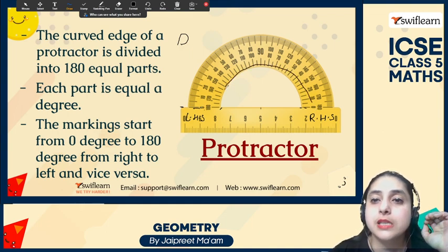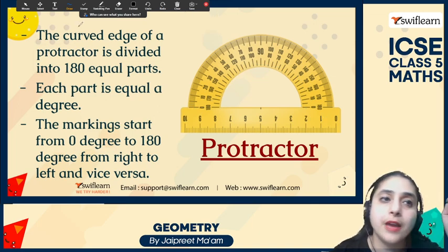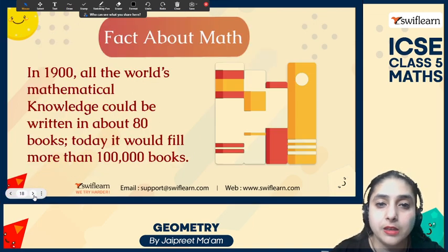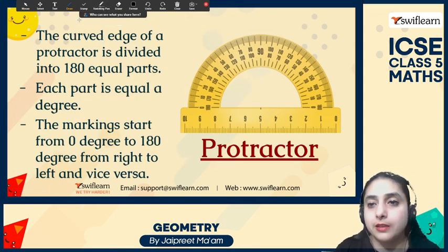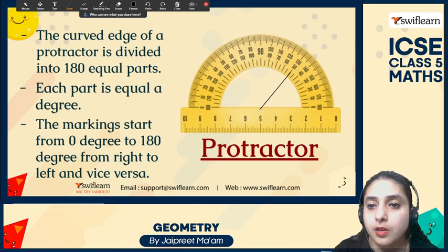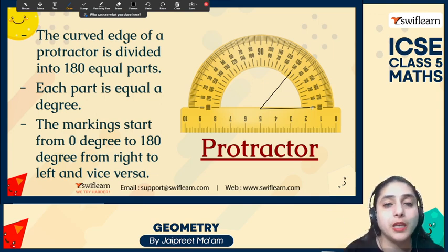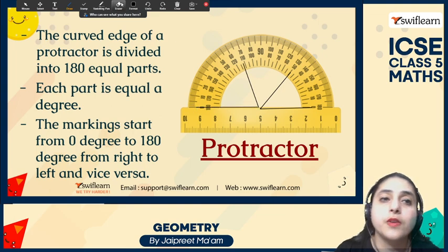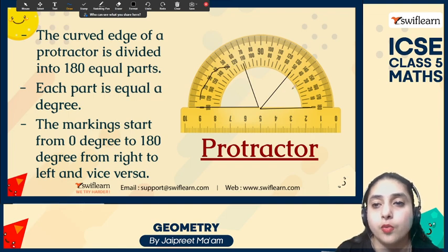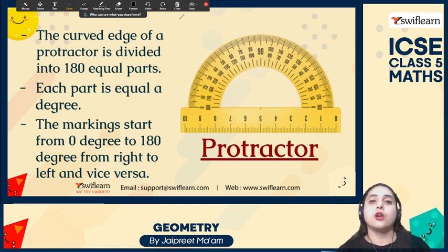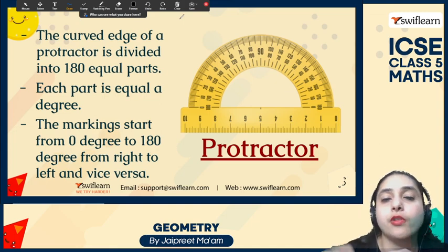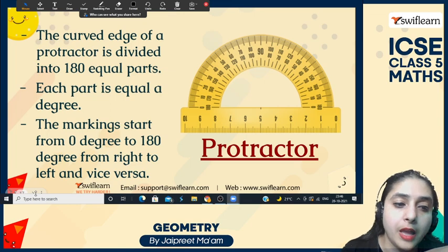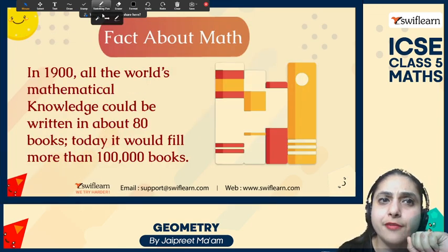The reason we have two scales is to measure angles in different orientations. If you have an angle that opens towards the right-hand side, use the scale that begins with 0 from the right-hand side. If you have an angle that faces towards the left-hand side, use the upper scale that starts from 0 on the left. Check whether the angle is open from the left or right so you can use the correct scale and measure it perfectly.